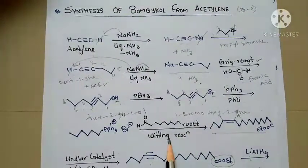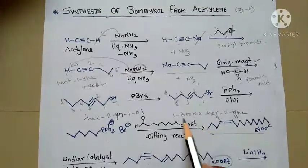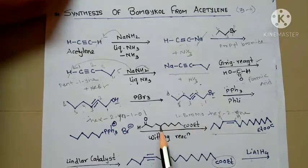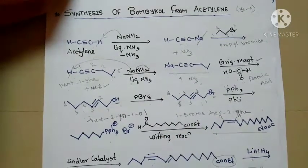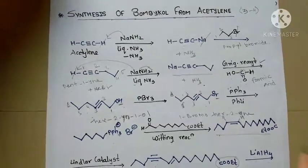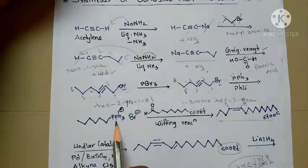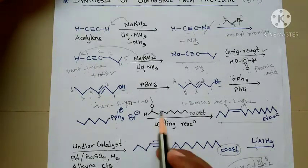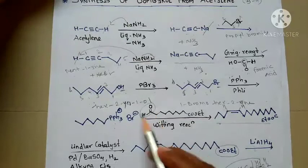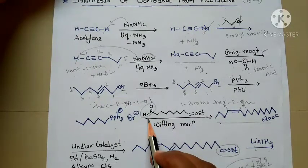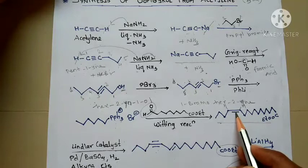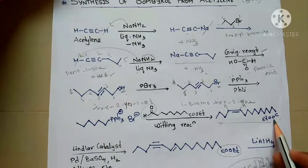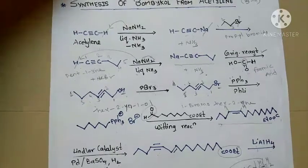When we do the Wittig reaction in the bombycol synthesis, we have to use the ester form of alkane. The triphenylphosphine-Br⁻ molecule and the aldehyde group are totally removed and formation of a double bond takes place in this intermediate. The remaining part is the same.